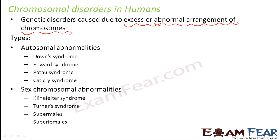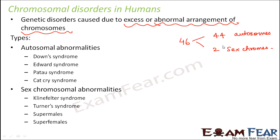Such abnormalities can happen either in the autosomes or in the sex chromosomes. We have a total of 46 chromosomes, out of which 44 are autosomes and the remaining two are the sex chromosomes. The sex chromosomes participate during fertilization — they are the haploid cells — whereas the 44 autosomes take care of all other traits in the body and do not take part in reproduction. If there are abnormalities in the autosomes, they are called autosomal abnormalities; if in the sex chromosomes, they are called sex chromosomal abnormalities.